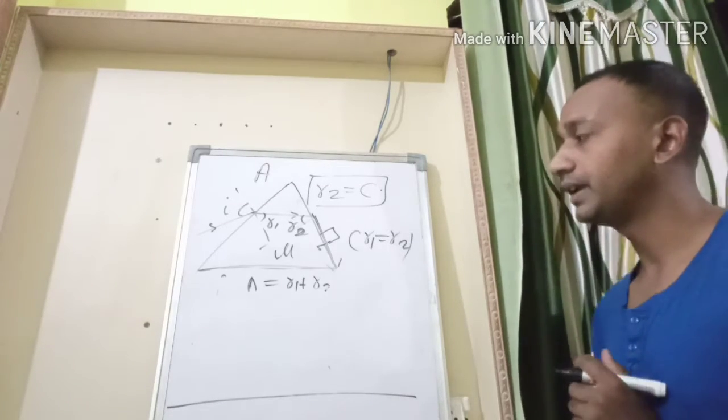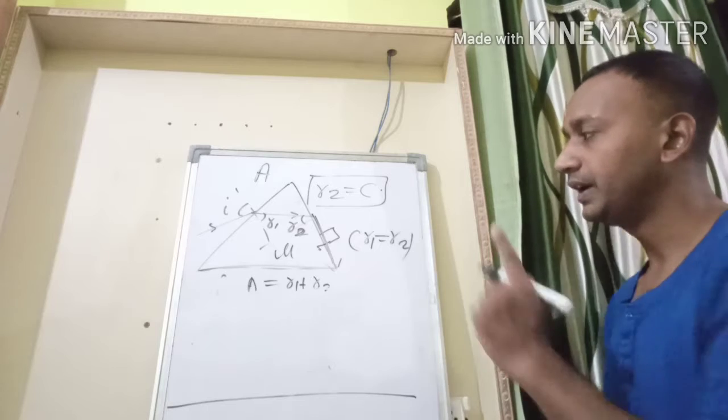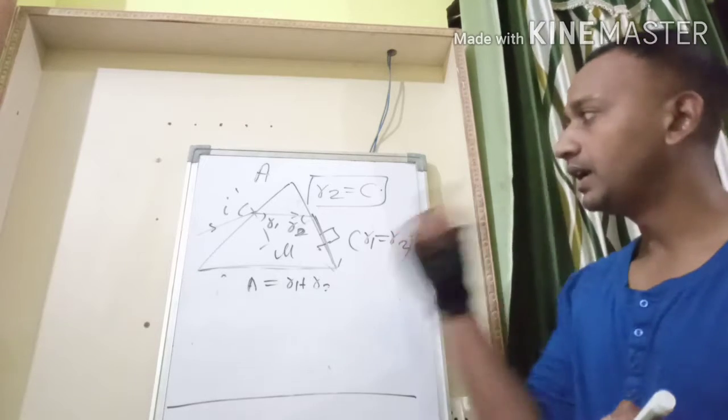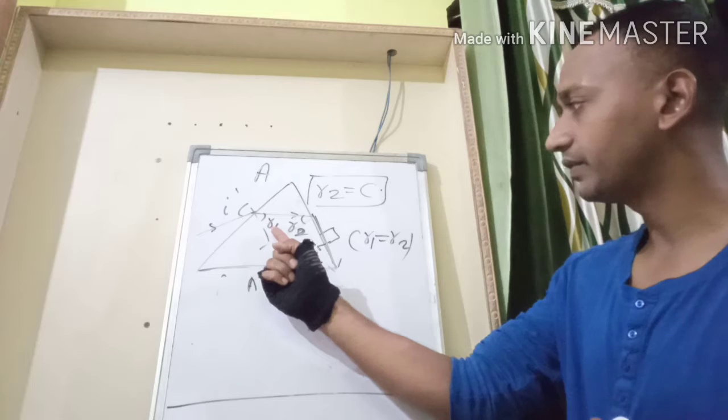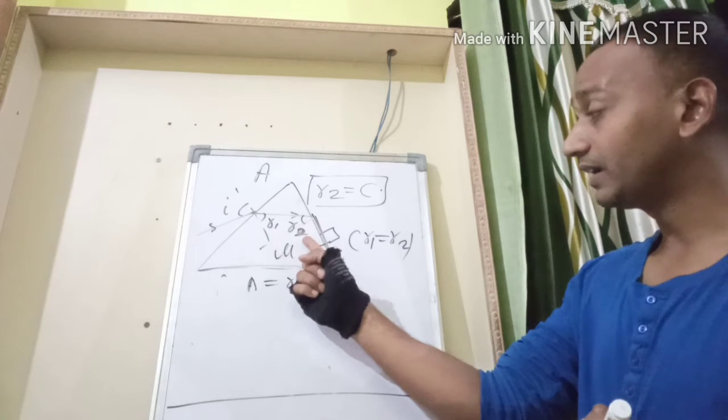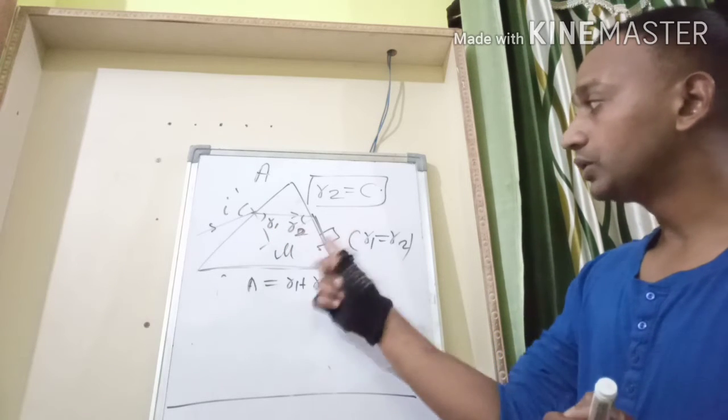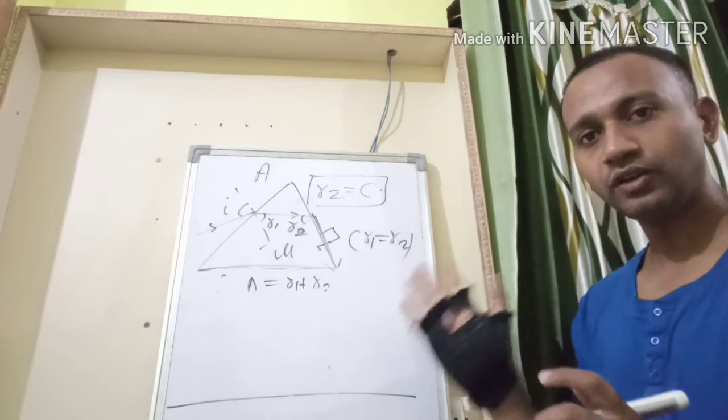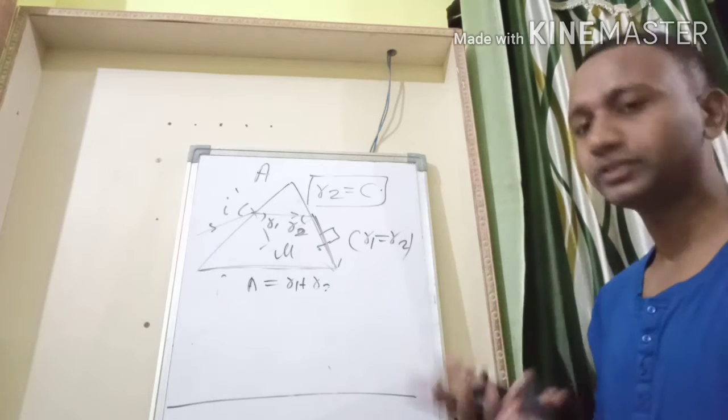If you can see in the figure, the ray is incident at angle i. It suffers refraction on the first surface, and we have taken this as angle of refraction r1 on the first surface. The angle of incidence on the second surface is r2.